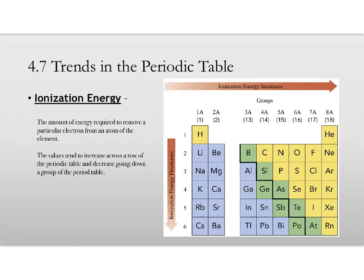Ionization energy is the amount of energy required to remove a particular electron from an atom of the element. The values tend to increase going to the right, across a row, and they decrease going down a group. And this has to do, ultimately, with the size of the atom, and again, therefore, the effective nuclear charge.